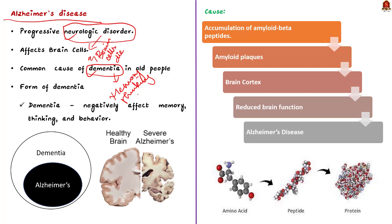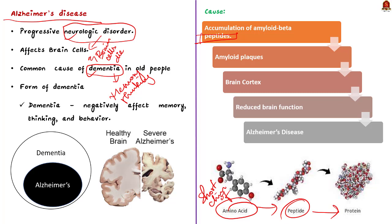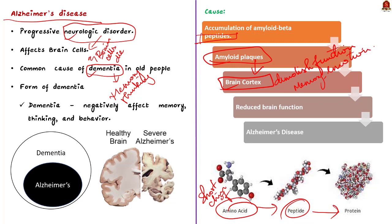Alzheimer's is caused by the accumulation of amyloid beta peptides in the brain. A peptide is a short chain of amino acids; multiple peptide chains make up proteins. This accumulation of amyloid beta peptides results in the formation of amyloid plaques. When these plaques appear on the brain's cortex region, they demolish its functioning — affecting memory, thinking, learning, reasoning, problem solving, emotions, consciousness, and sensory functions.